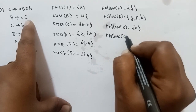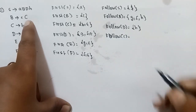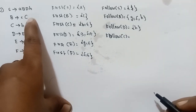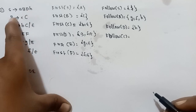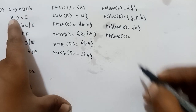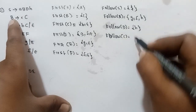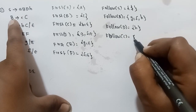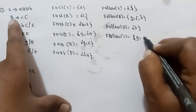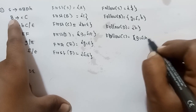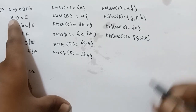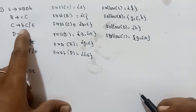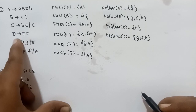Next, FOLLOW of C. Since E and C are immediate terminal symbols, FOLLOW of C equals FOLLOW of B. FOLLOW of B equals {G, H}. So FOLLOW of C equals {G, H}.